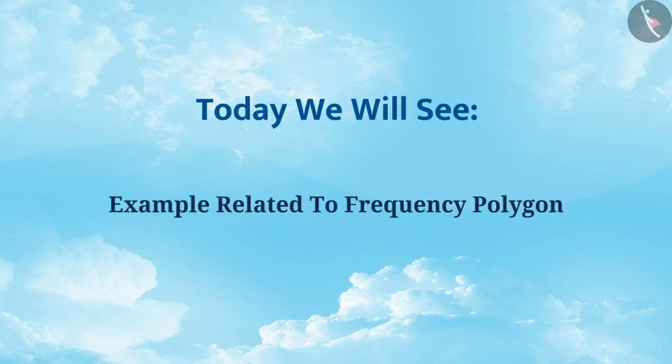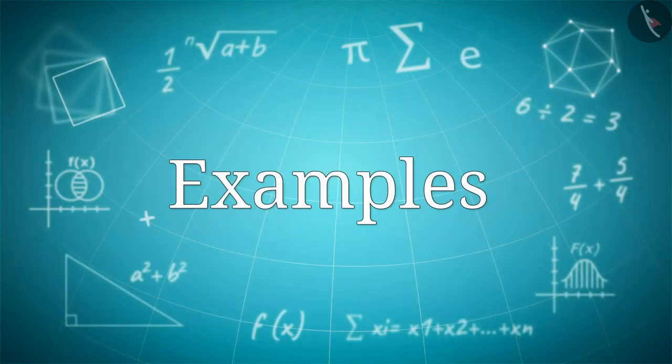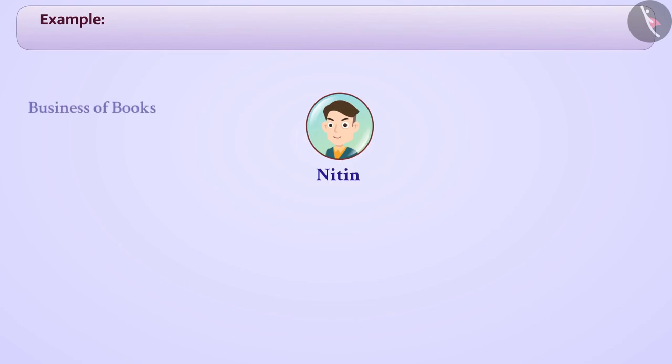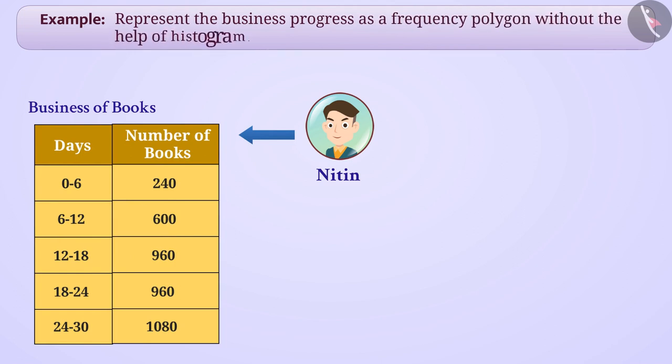Today we will see examples related to frequency polygon. Nitin started the business of publishing books. Production of books in the first few days of business is as follows. Represent the business progress as a frequency polygon without the help of histogram.